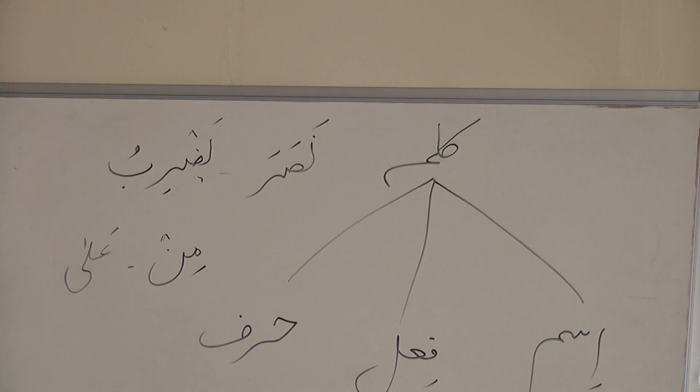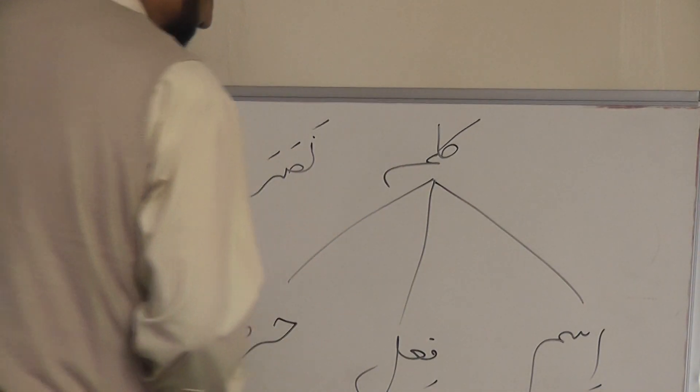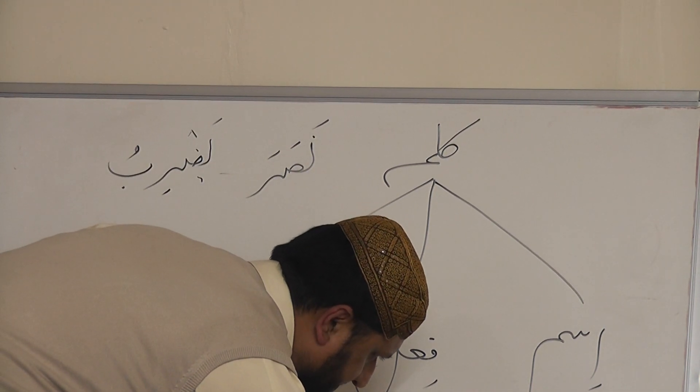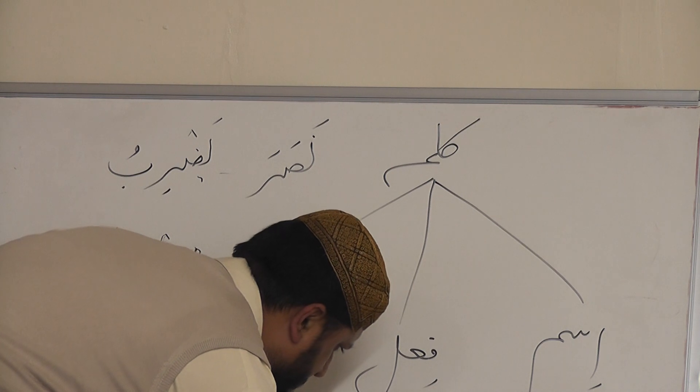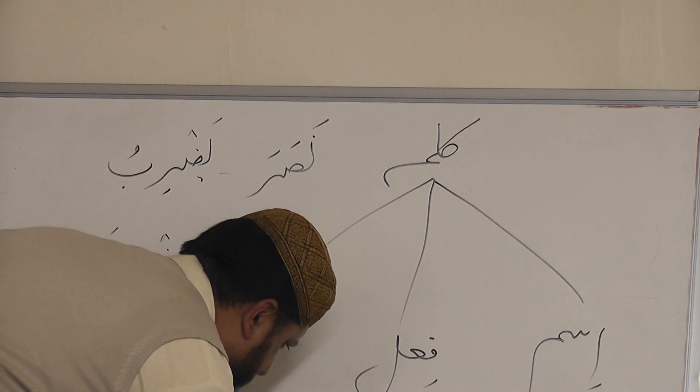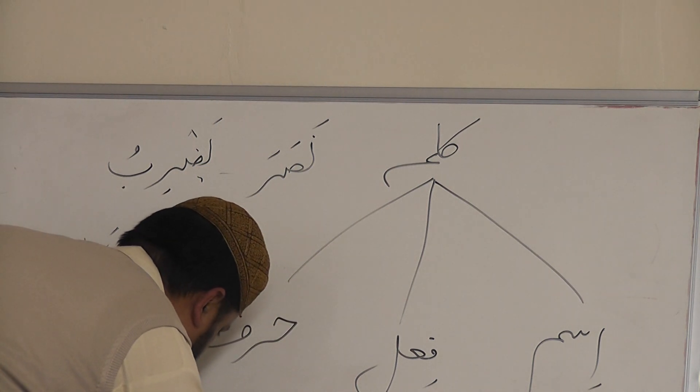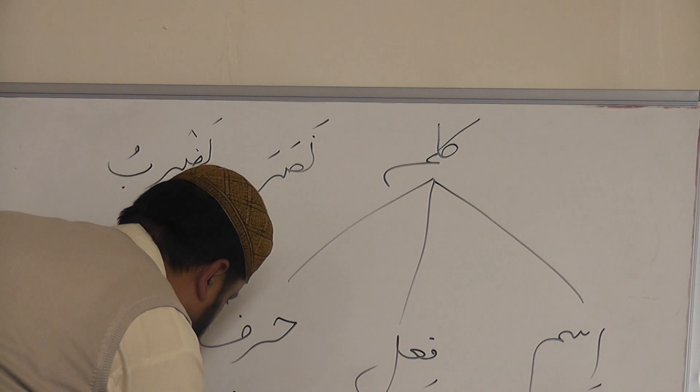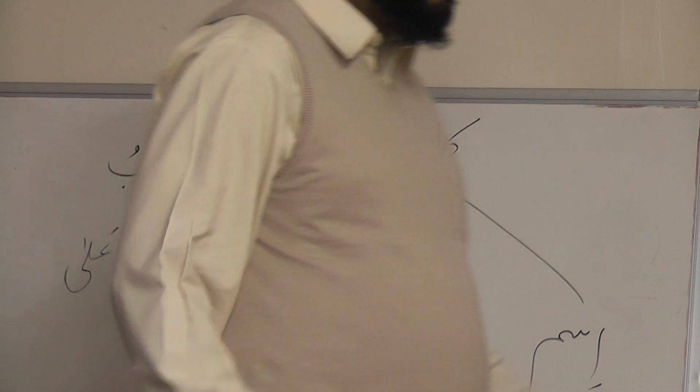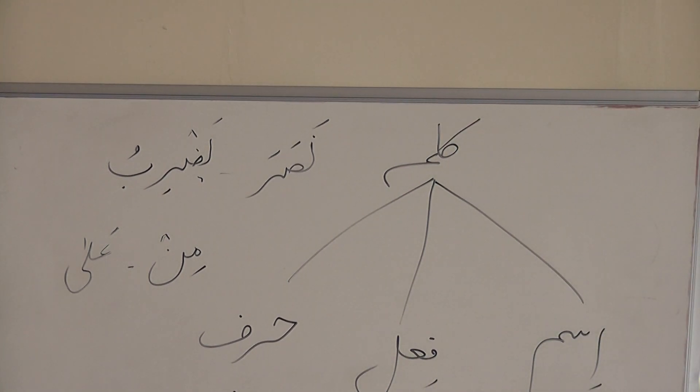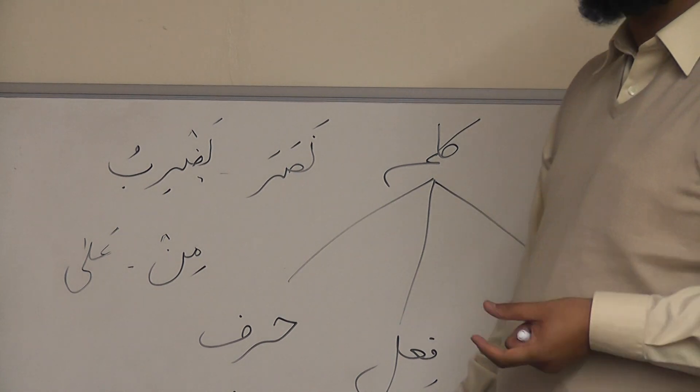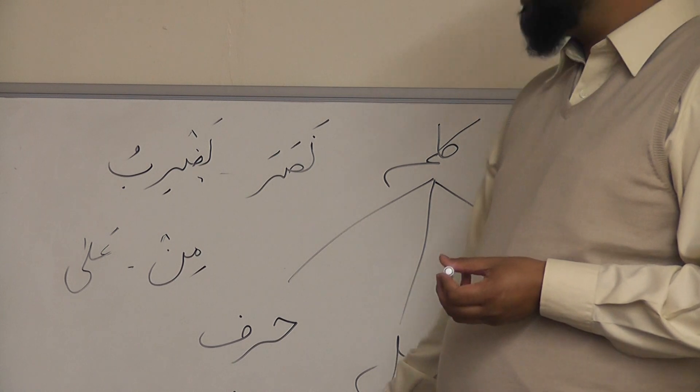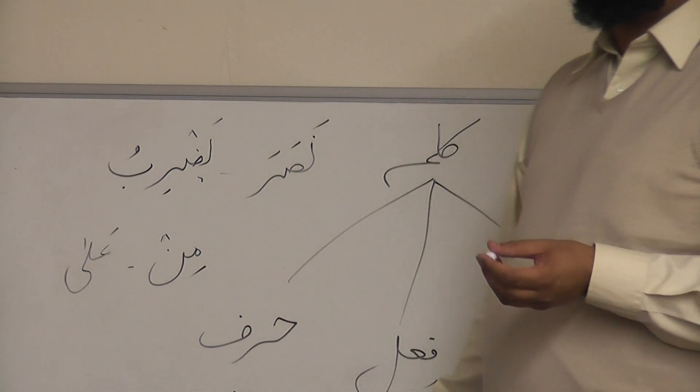Now we will learn an example in which we can know all these three. Zahabah Zaidum illal madrasati—Zaid went to the school. Zahabah is a verb, Zaidun is noun, illal is a particle, al madrasa means school, is a noun.